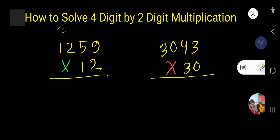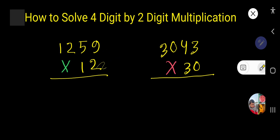From this video you will learn how to solve four digit by two digit multiplication. This is a four digit number and this is a two digit number. We would like to multiply this four digit number by this two digit number.